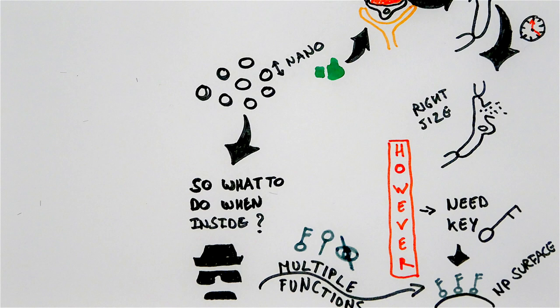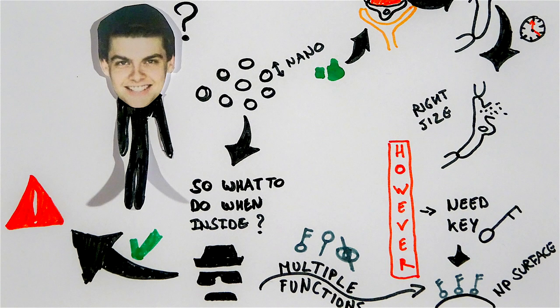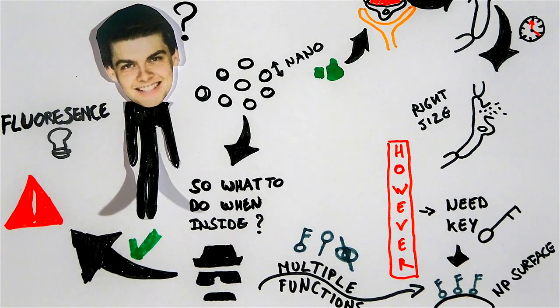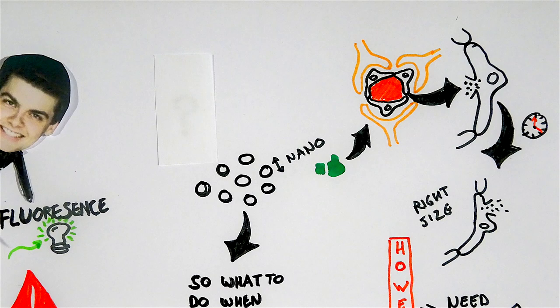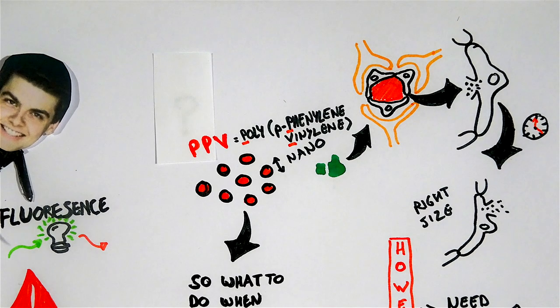Now how can these nanoparticles signal me that I have found the right bad guy? Well for that, I use a very special technique called fluorescence. And that is basically sending in light from one color, and getting light back from another color. And I can do that with my nanoparticles because they're made of a very special material called PPV, or polyparaphenylene vinylene.